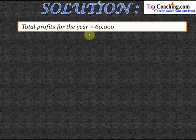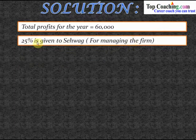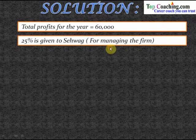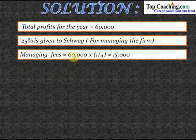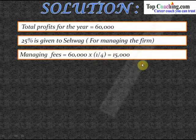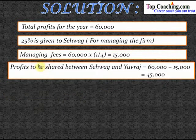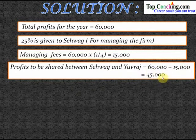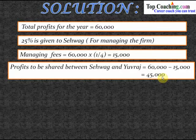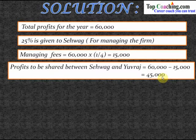Total profits for the year were sixty thousand. 25% is given to Saivak for managing the firm — this is essentially his management fee. The managing fee is sixty thousand multiplied by one-fourth, which equals fifteen thousand. The profits to be shared between Saivak and Yuvraj are sixty thousand minus fifteen thousand, which equals forty-five thousand. This forty-five thousand is shared on the basis of their investments.